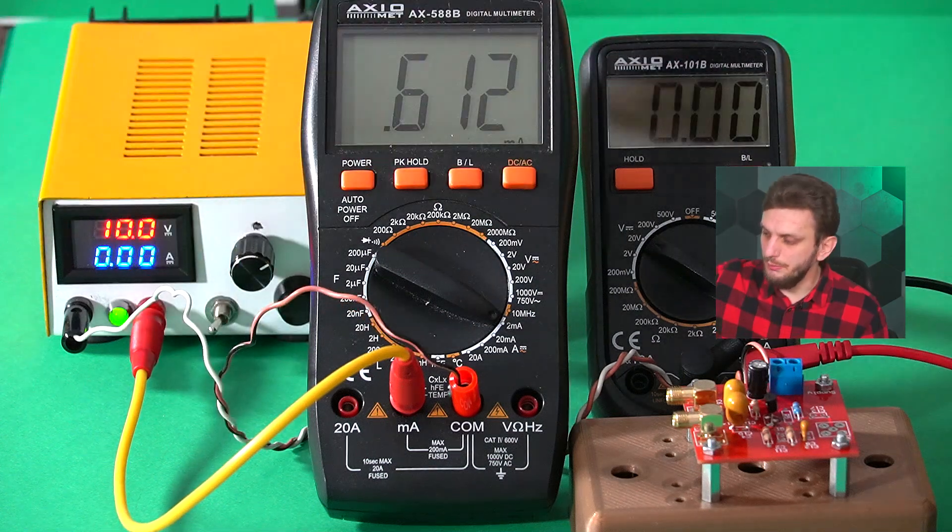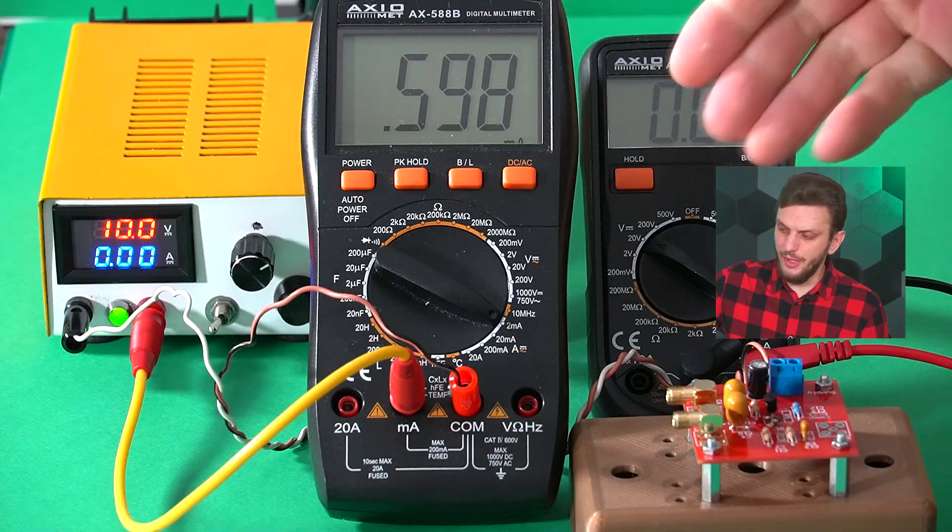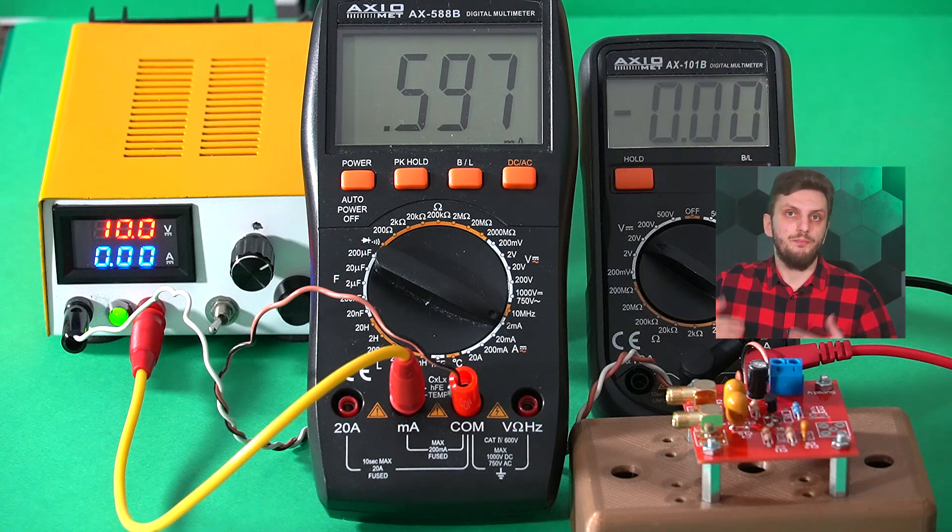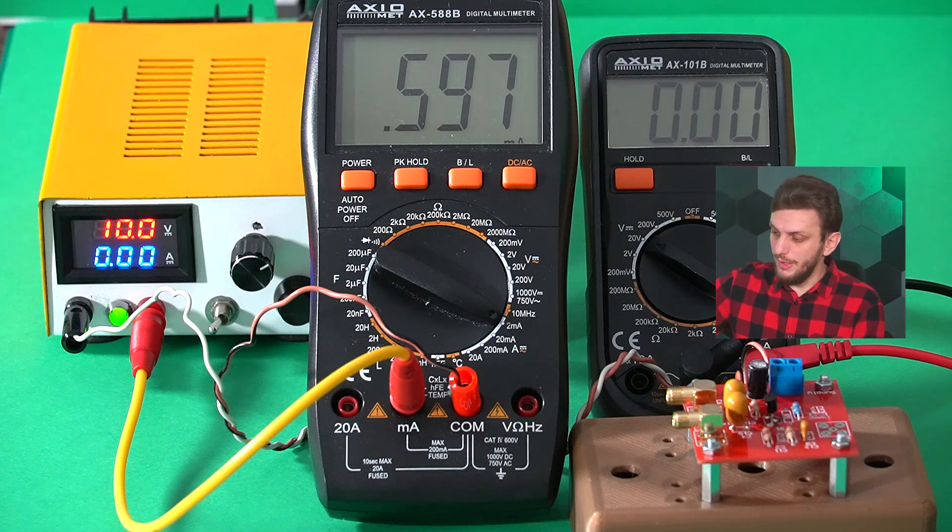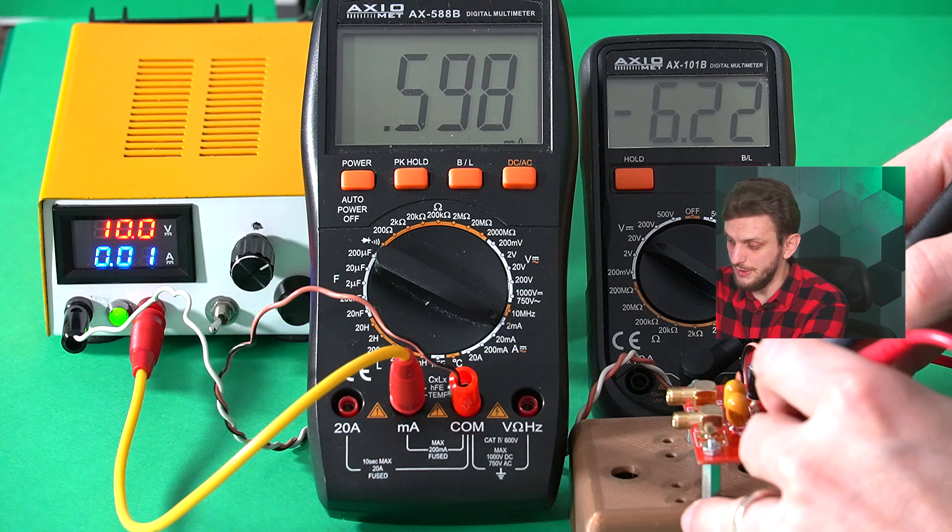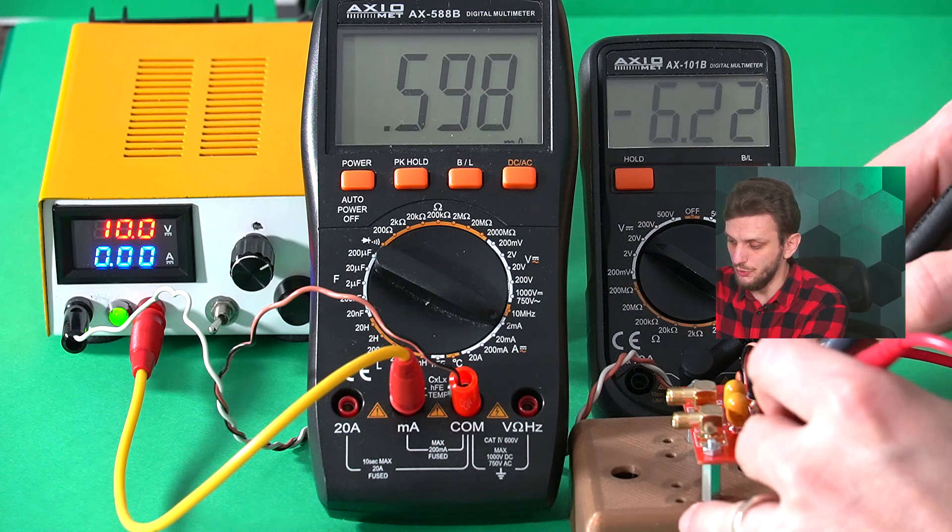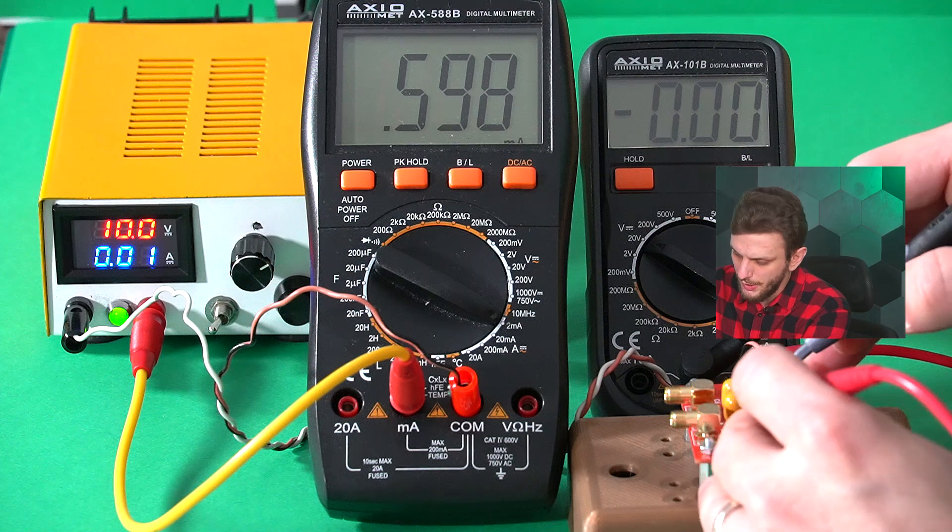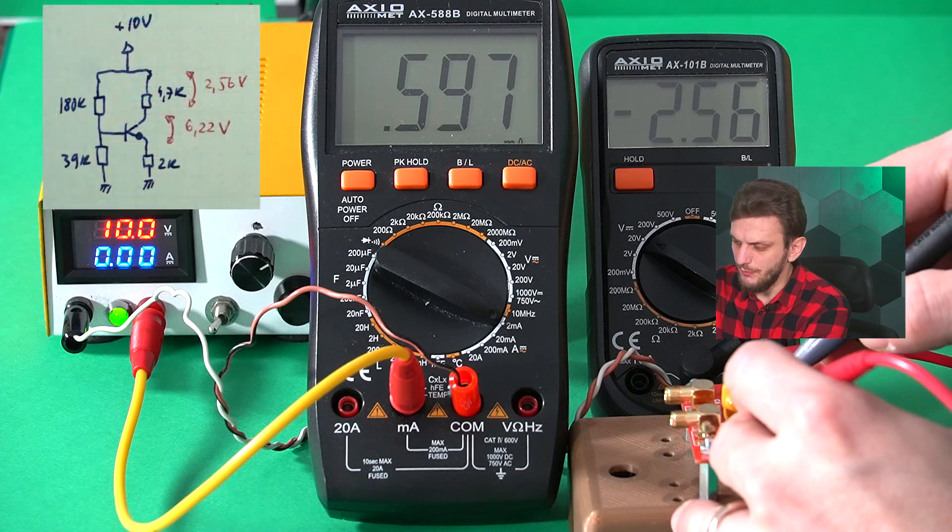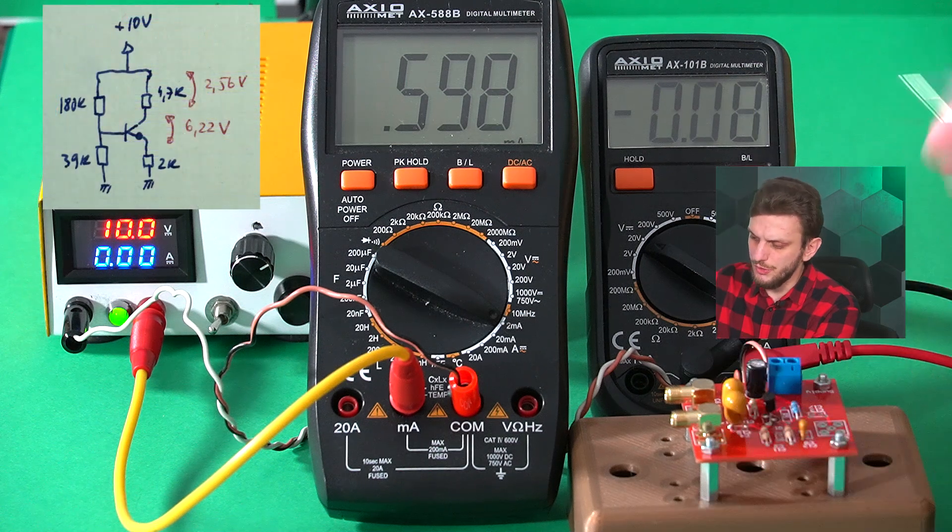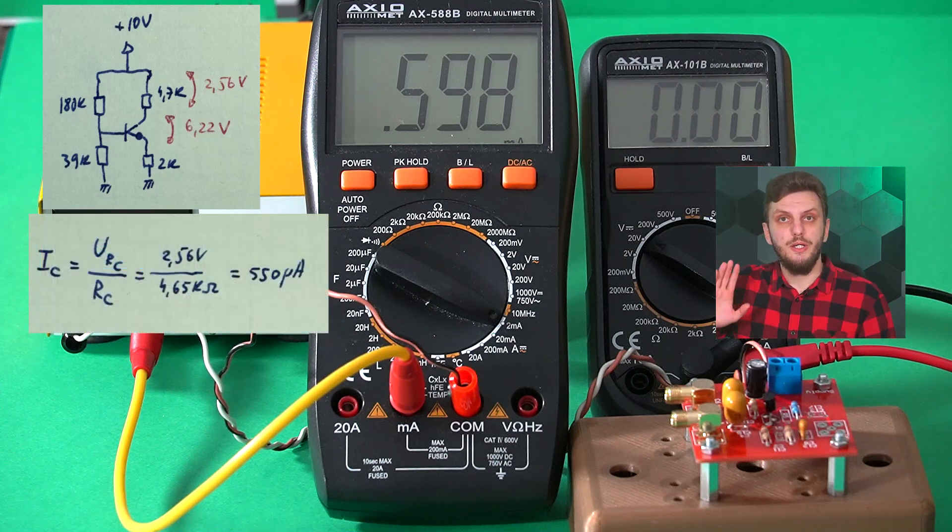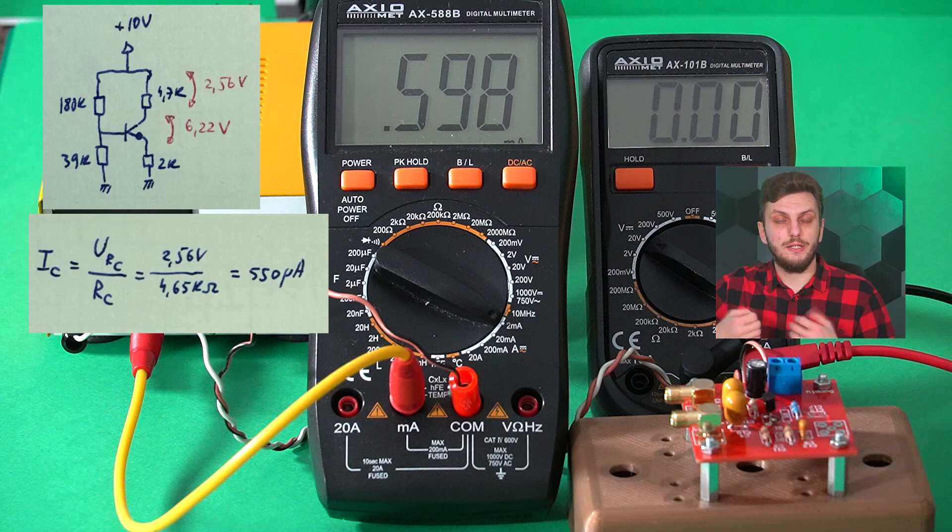If we turn on the power supply, we can see that the complete circuit is drawing about 598 microamps, most of this being in the collector current, and we can now proceed to verify the various voltages. First off, we can see that our collector emitter voltage is 6.22 volts, and secondly, we can see that the voltage drop on our collector resistor is 2.56. Knowing this value, and knowing that the collector resistor is 4.7 kilo ohms, we can exactly calculate the collector current.